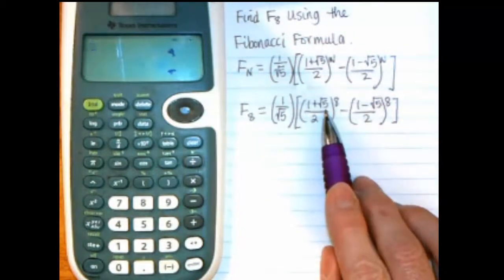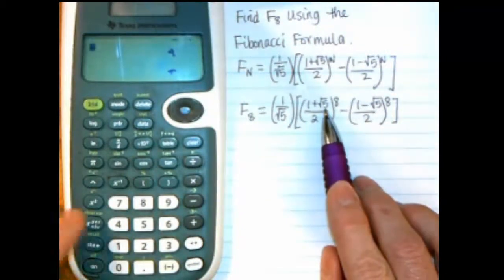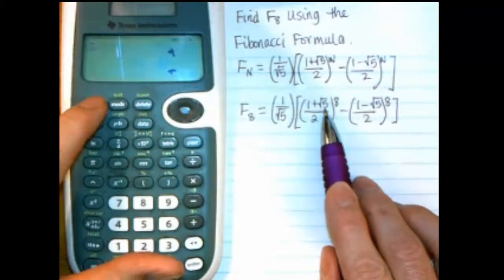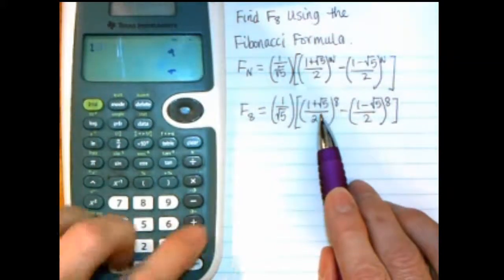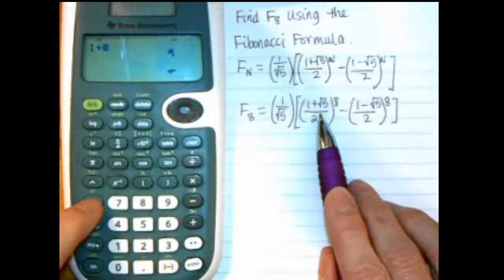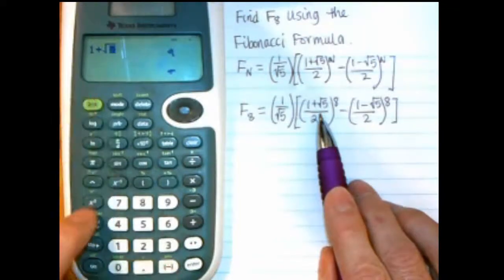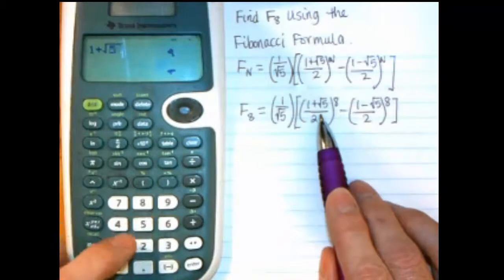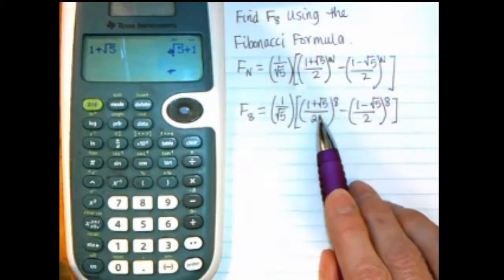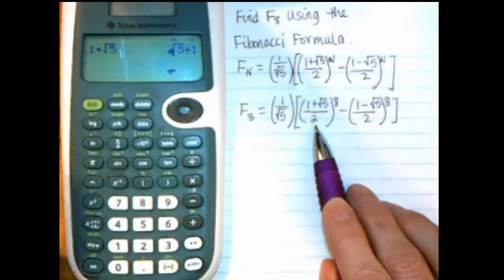So first thing I want to do is the square root of 5. And on this calculator, I believe I can just say 1 plus, do the square root. So I'm doing second and then the X squared, which gives me the square root there. Type in 5, and then I'll push enter. And it's showing it in radical form.